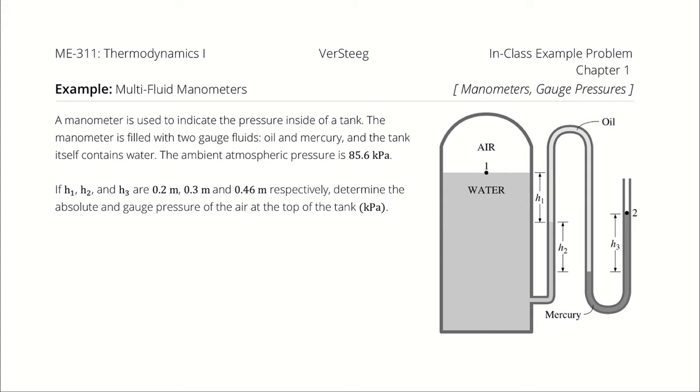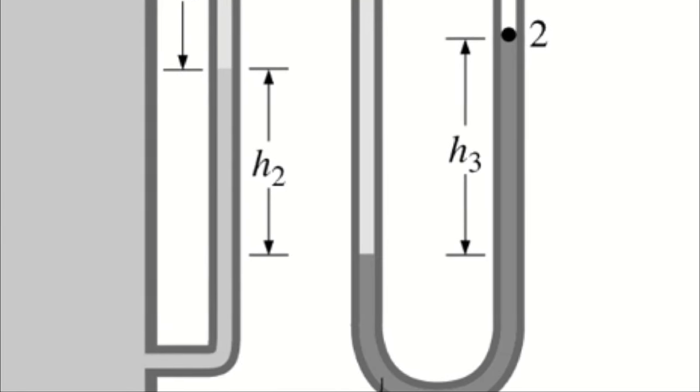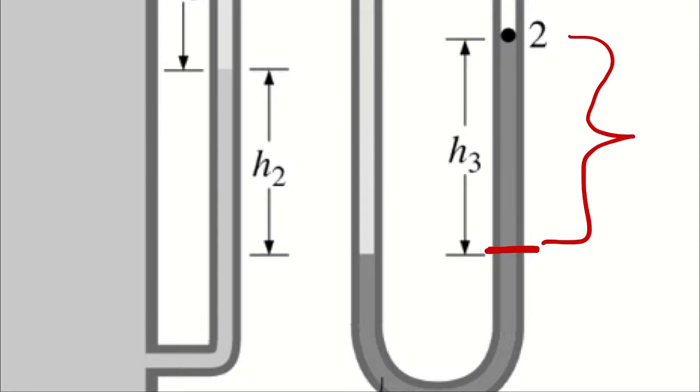Next, even though this has multiple gauge fluids, the analysis itself isn't any more complicated than it was with a single gauge fluid manometer. We are repeating that approach several times. We are going to use our Pa equation to work across this height difference, which will give us the pressure here, which is the same as the pressure here.